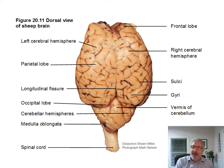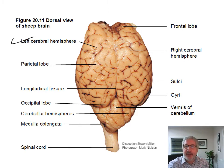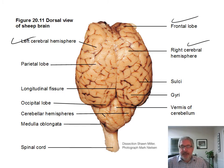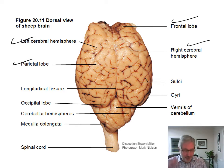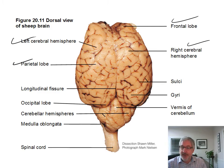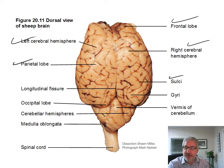Here's a sheep brain dorsal view looking down from the top. You have your left cerebral hemisphere and your right cerebral hemisphere. Here's your frontal lobe — in the sheep it's not that developed or that big. Here's your parietal lobe. They don't have the capacity or the need to reason and do a lot of higher-level organizing of their world like we do. You can see some examples of sulci and gyri.